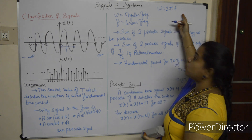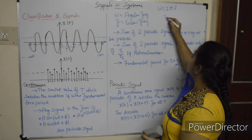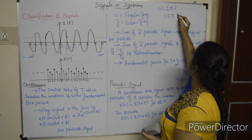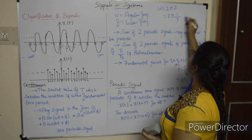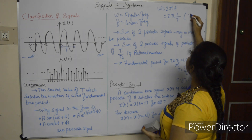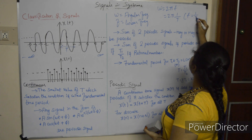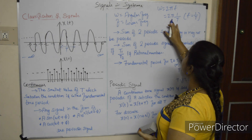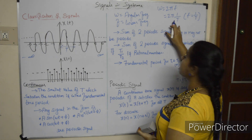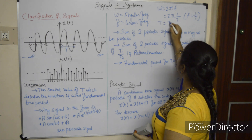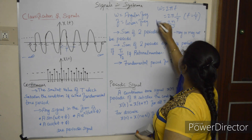We know that f = 1/T, so omega = 2π/T, which gives T = 2π/omega. This is the formula for the fundamental time period.